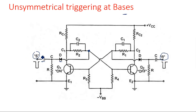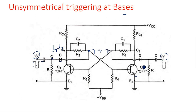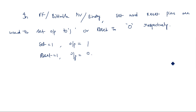So, as explained, a negative-going pulse is given as input. When it passes through the RC-diode circuit, it produces both positive and negative spikes, from which only the negative spikes are selected. These negative pulses are used to change the state of transistor Q2 whenever it is in the on state. This is the complete explanation of unsymmetrical triggering at collectors as well as at bases.